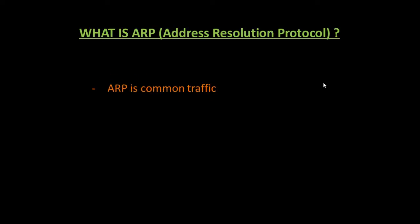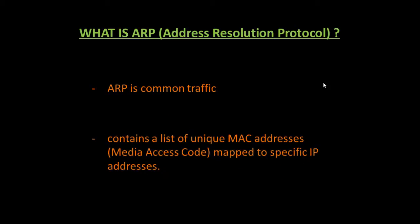ARP is an address resolution protocol, better known as ARP. It's a very common traffic on today's computer networks. Each computer, including switches and routers, maintains an ARP cache. This ARP cache contains a list of unique MAC addresses mapped to specific IP addresses. This table or cache is populated as the computer requests information from other computers on the same subnet.